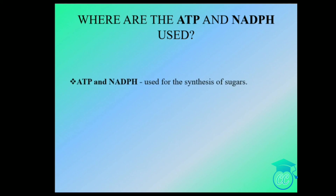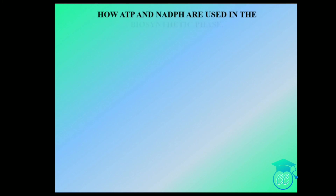ATP and NADPH produced in the light reaction are used in the synthesis of sugar, which takes place in the dark reaction. Oxygen formed by the splitting of water diffuses out of the chloroplast and is one of the most important net products of photosynthesis.